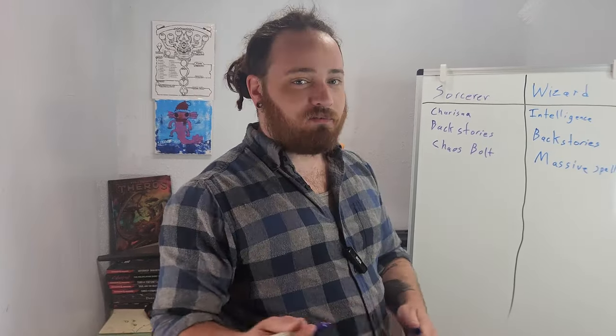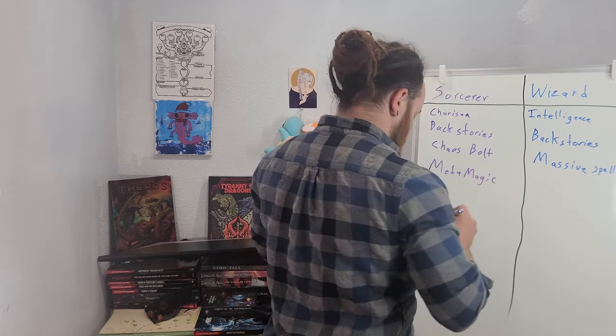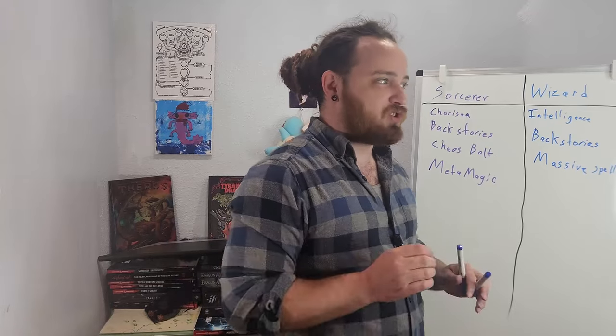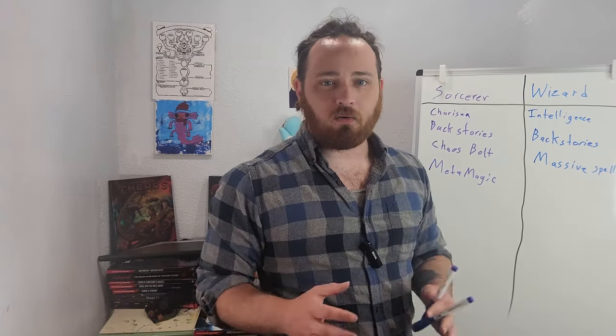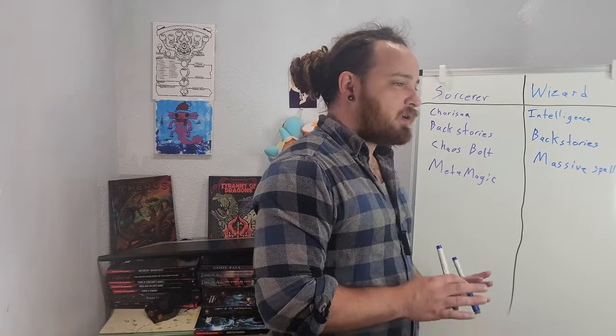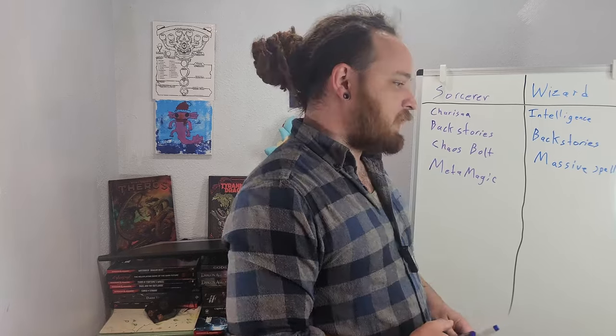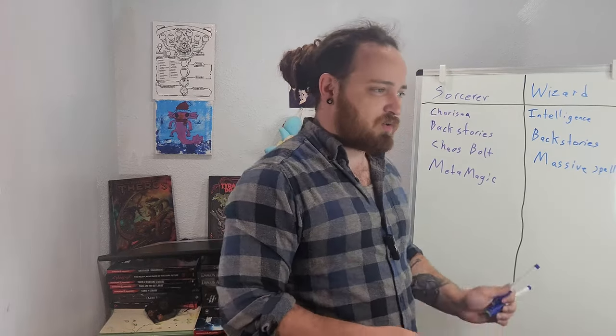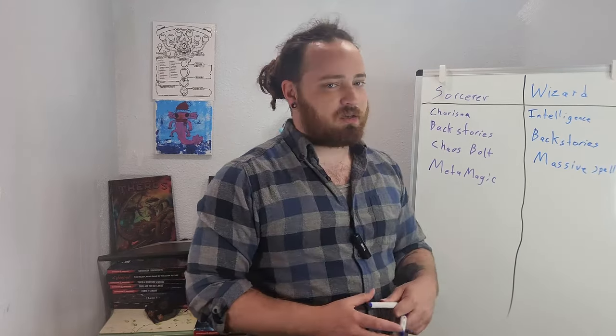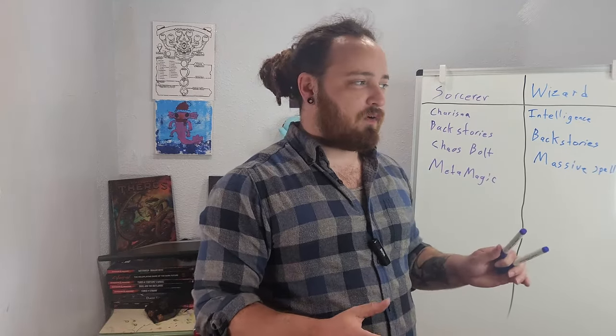But sorcerers do still have their metamagic. Which, as we talked about in the Warlock vs. Sorcerer video, metamagic is broken. It is so fun and gives the sorcerer a new amount of versatility that they didn't otherwise have before. It greatly increases their combat potential. And it's just fun. If I remember correctly, the wizard has a couple more spell slots than the sorcerer. Not a staggering amount. But, even with Chaos Bolt and metamagic, I would still argue that the wizard is more competent in battle as far as damage dealing goes.